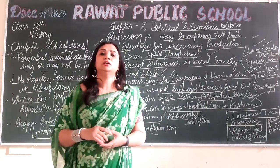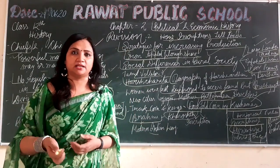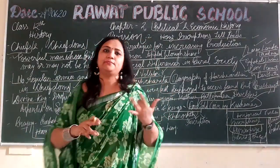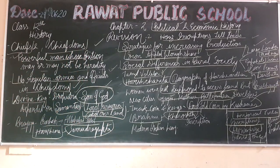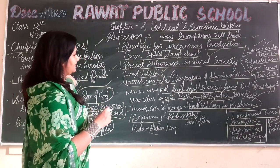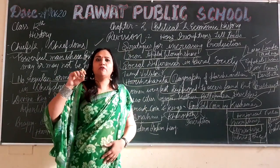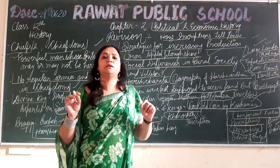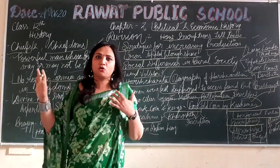Rajao ki tarif mein, rajao ki prashansa mein unchi se likhi jaati thi, unki achchi baaten. So this is the chapter of the day — about chiefs and chiefdoms, about divine kings, how they were called, and about the scripts — Brahmi and Kharosthi. How it was done, you will see the videos, and easily we will be able to come to know.